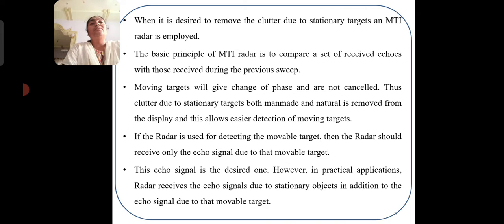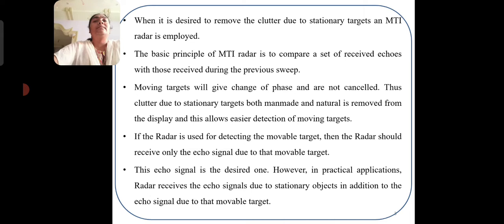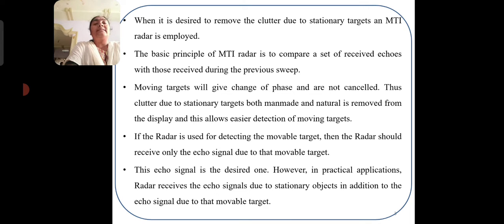When it is desired to remove the clutters due to stationary targets, an MTI radar is employed. The basic principle of MTI radar is to compare a set of received echoes with those received during the previous sweep. Moving targets will give a change of phase and will not cancel. Thus, clutter due to stationary targets, both man-made and natural, is removed from the display, allowing easier detection of moving targets.